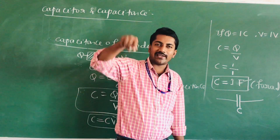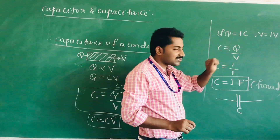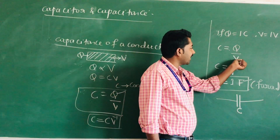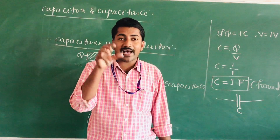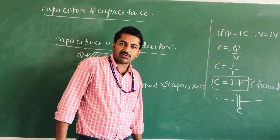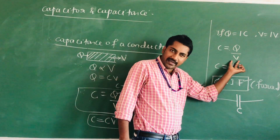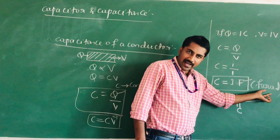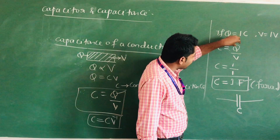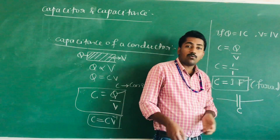Capacitance does not depend on the charge or its potential. If the charge increases, the electric potential also increases proportionally, so their ratio remains constant. When 1 Coulomb of charge is added to a conductor and its electric potential rises to 1 Volt, it is said to be 1 Farad.